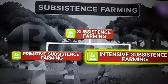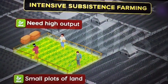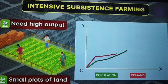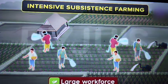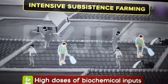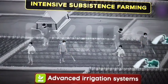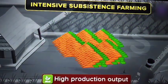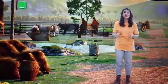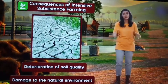Another type of subsistence farming is intensive subsistence farming. In places where farmers have small plots of land but need a high output to feed a high population, they tend to indulge in very intense farming practices like the use of a large workforce, high doses of biochemical inputs like fertilizers and pesticides, and advanced irrigation techniques. All this is done in order to obtain higher production output. However, all these practices have led to the deterioration of soil quality and have caused quite a bit of damage to the natural environment.